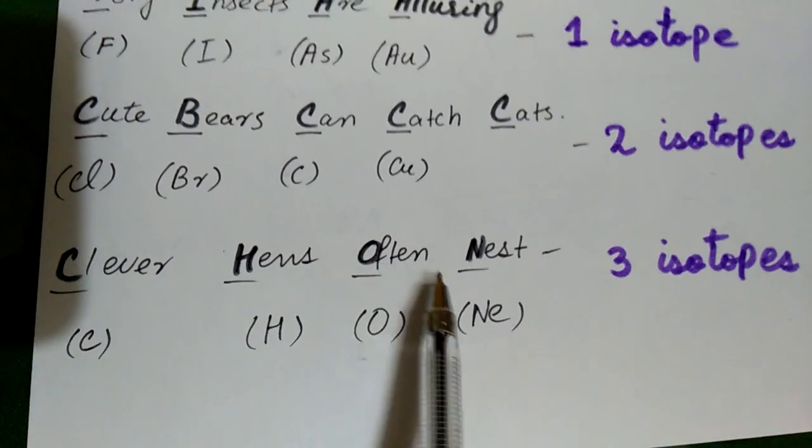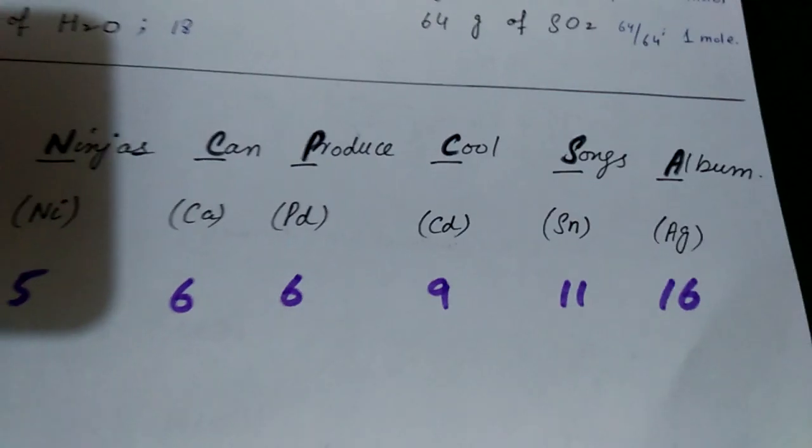The number 3 is clever, hence often nest. How many of them are? Three isotopes. After that,